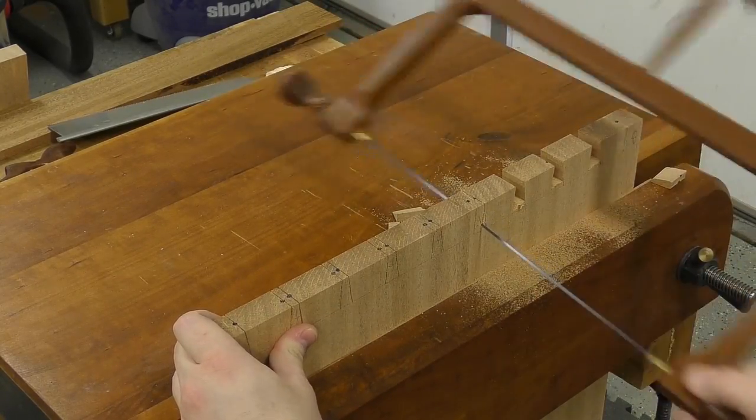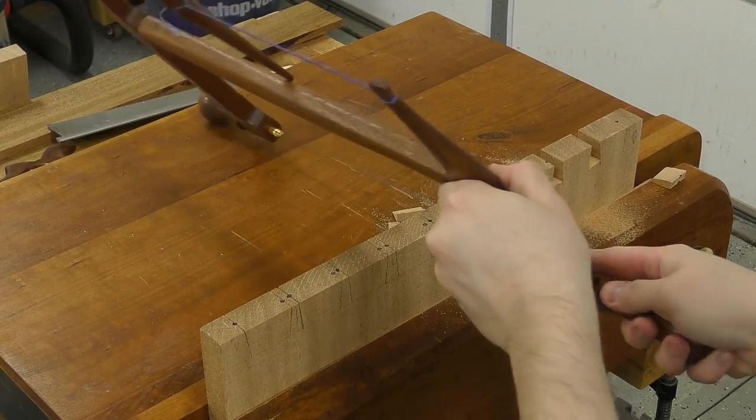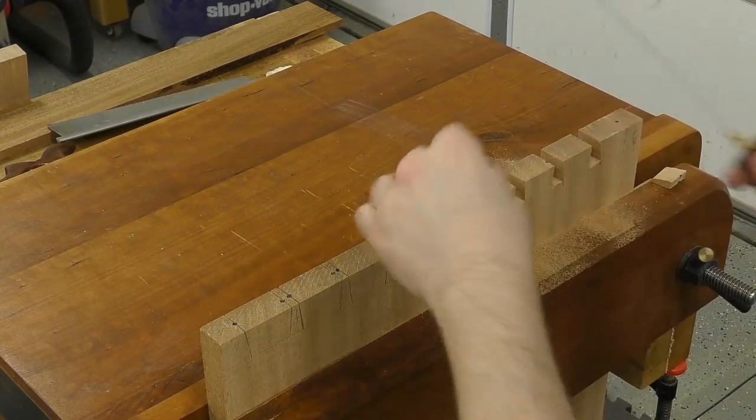And to remove the waste, I like to use my bow saw. And when I remove the waste, I keep about an eighth of an inch of waste above the scribe line that I can then chisel away later.